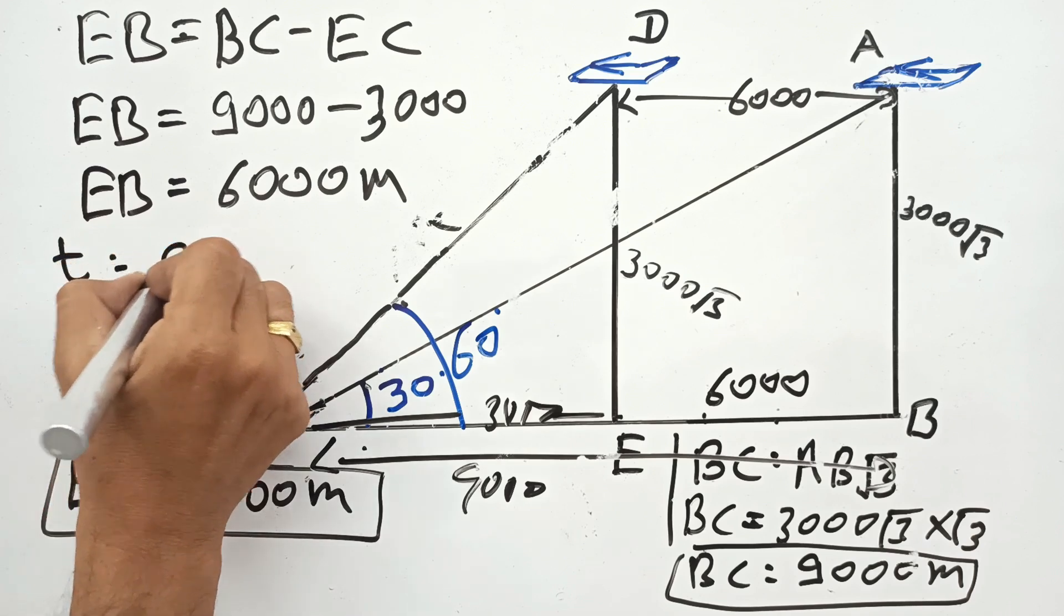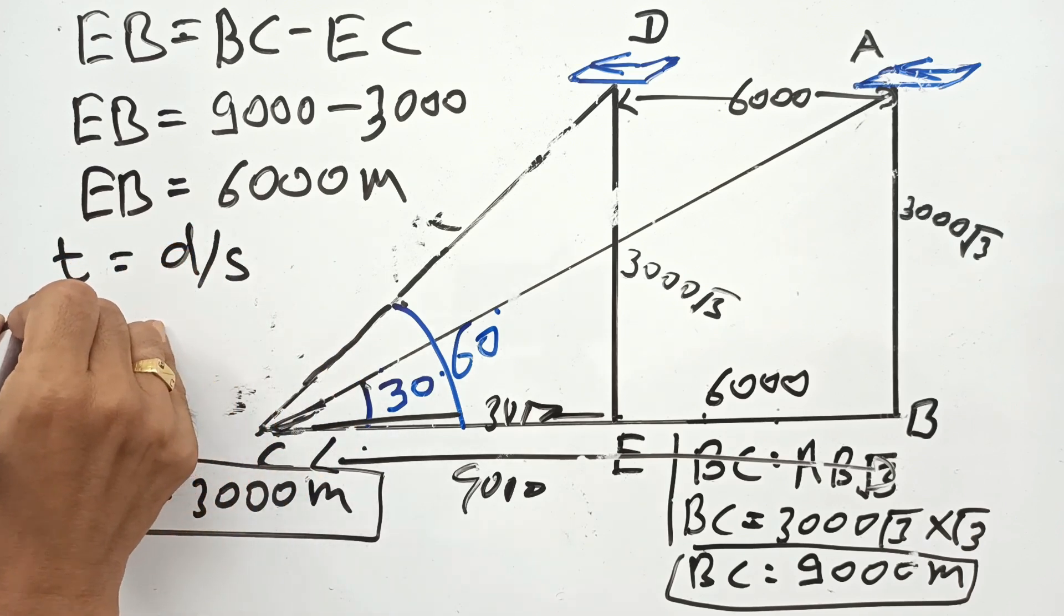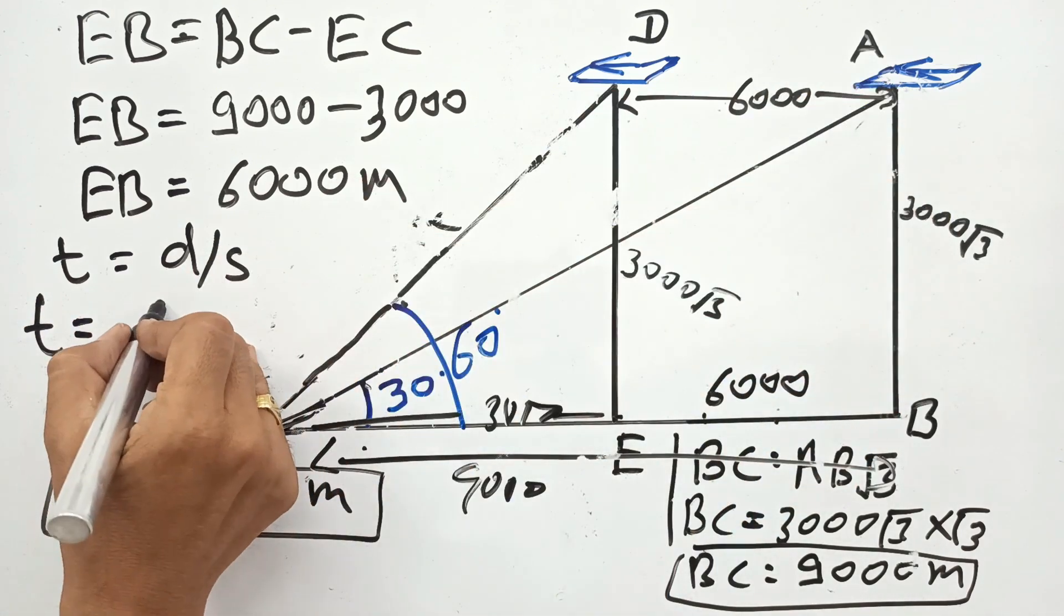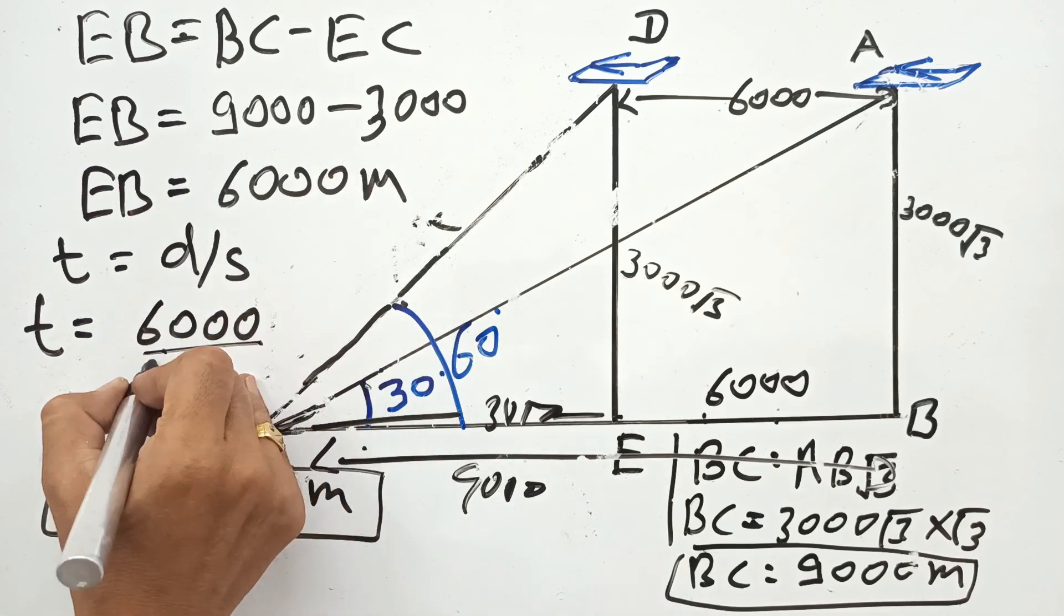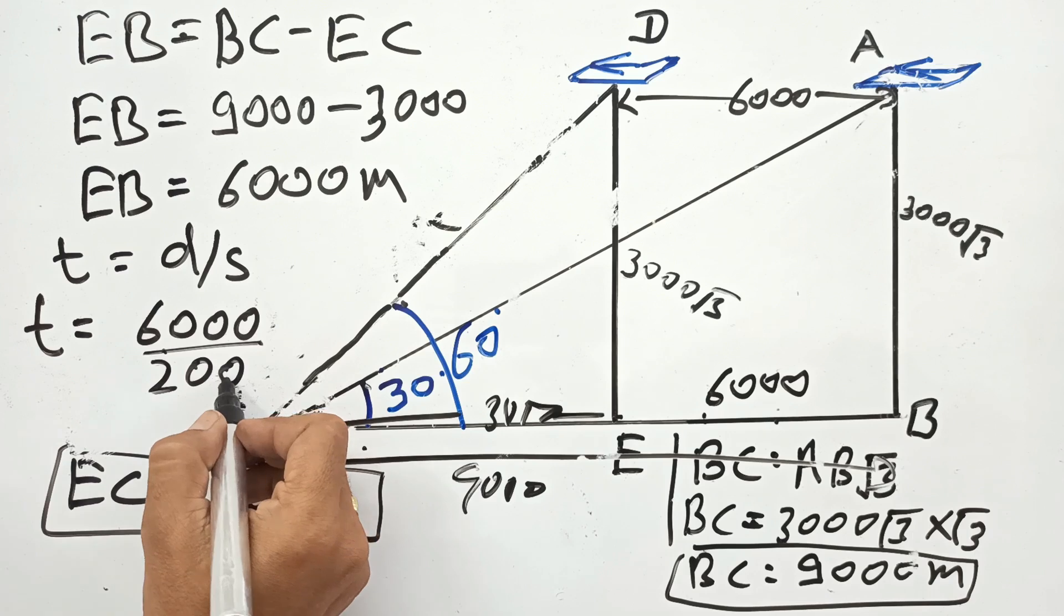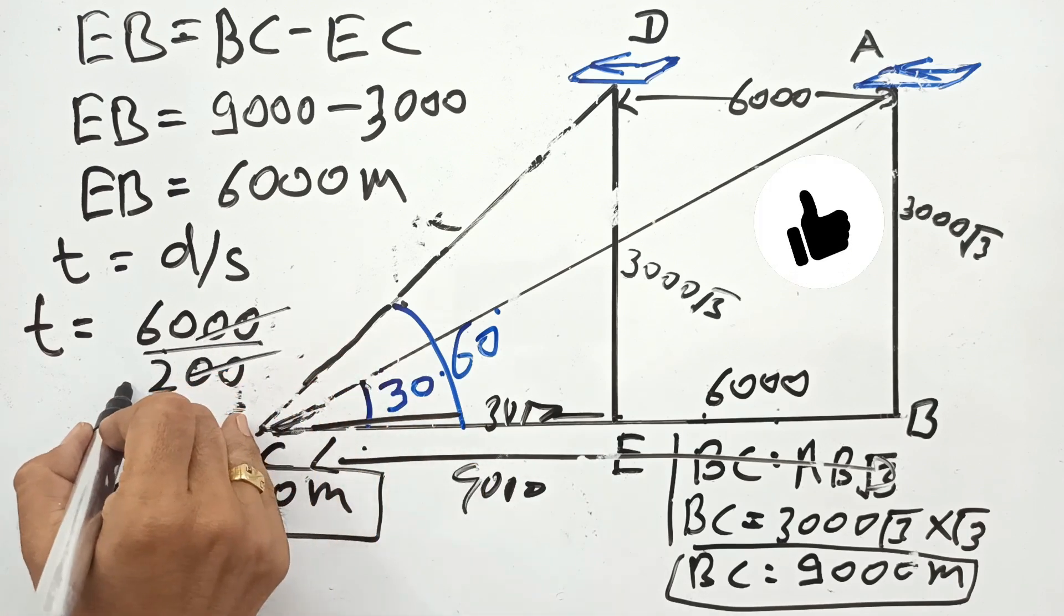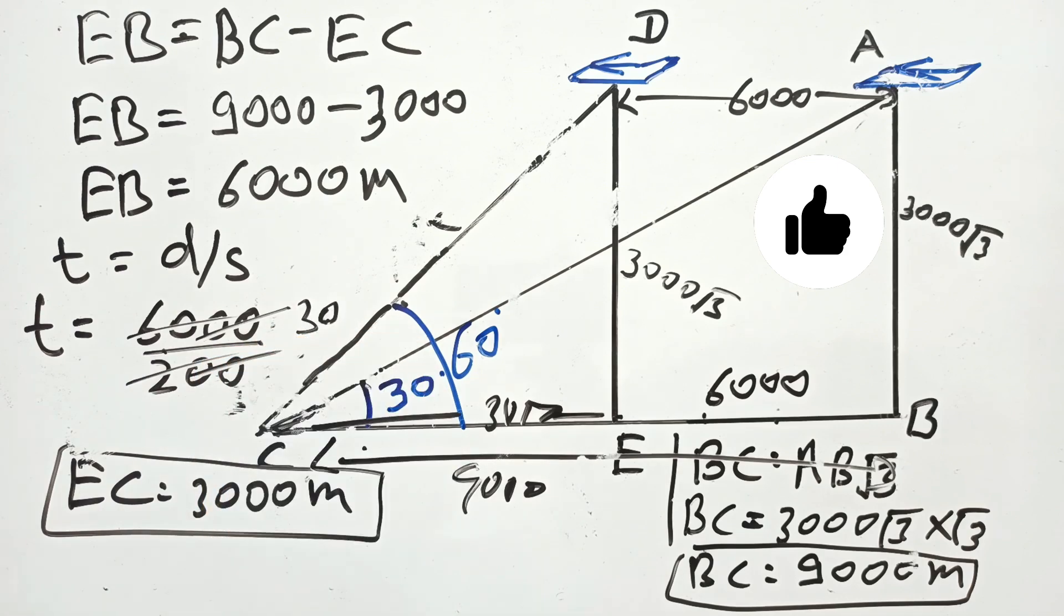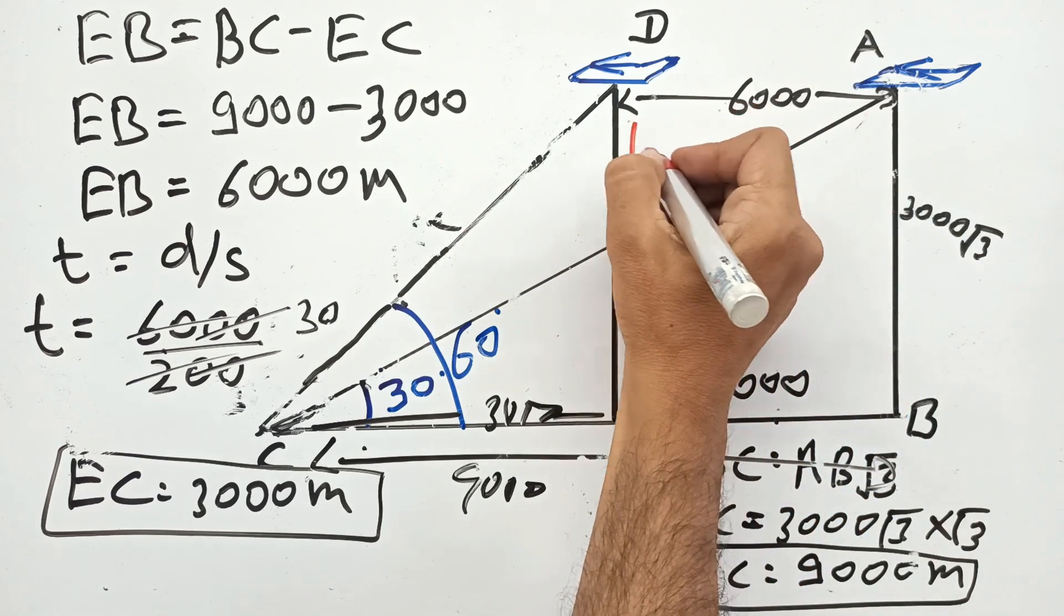So the time taken equals distance, which is 6000, and the speed we already converted into meters per second, 200. This is in meters, this is also in unit meters, so this is coming 30 seconds. So the time taken to change the situation from A to D of the aeroplane is 30 seconds.